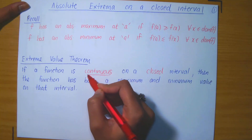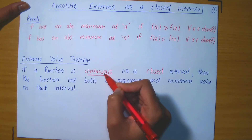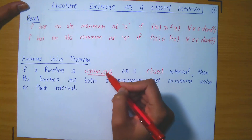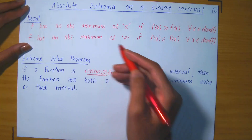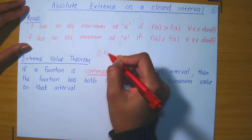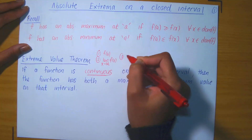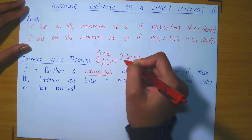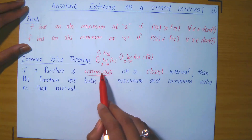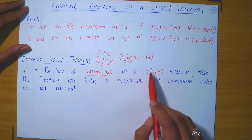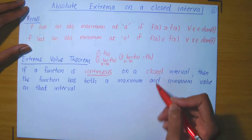Recall the definition of continuity, which we covered previously. A function is continuous at a point if: (1) f(a) is defined, (2) the limit of f(x) as x approaches a exists, and (3) the limit of f(x) as x approaches a equals f(a). That is the definition of continuity at a point, but now we're talking about continuity on a closed interval. A function is continuous on the interval if it is continuous at all points in that closed interval.